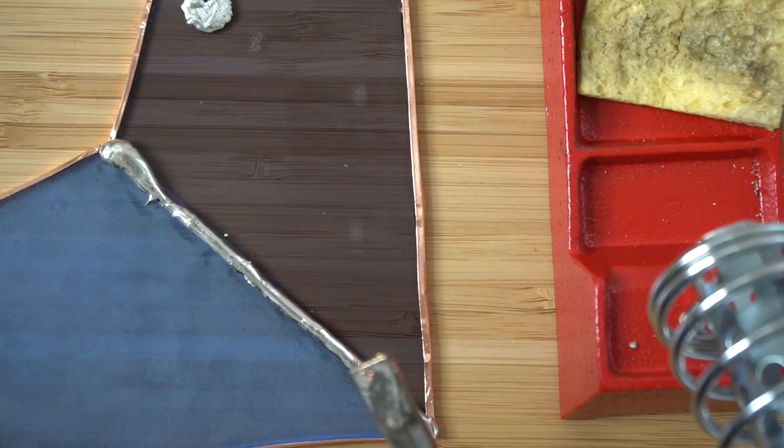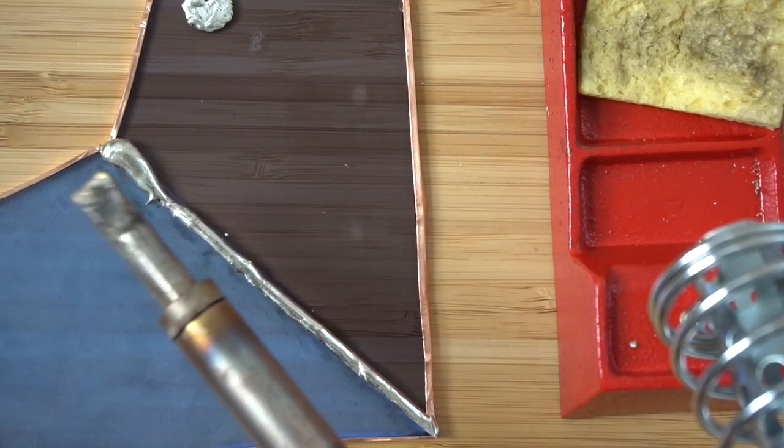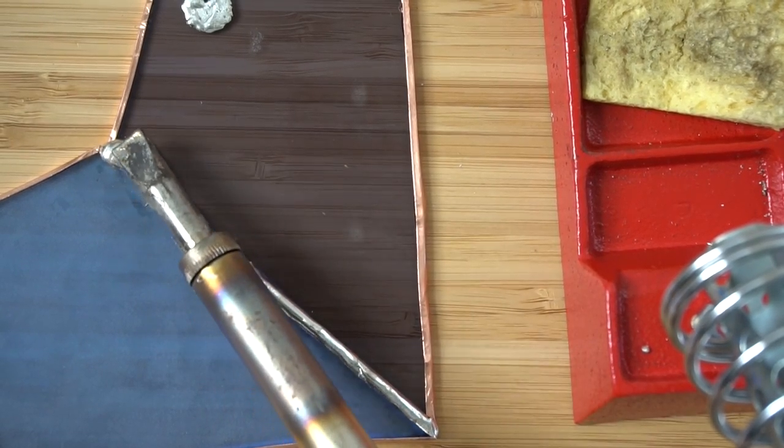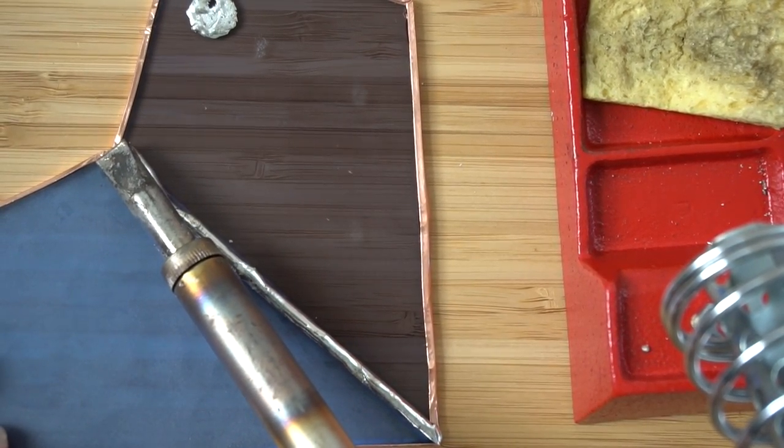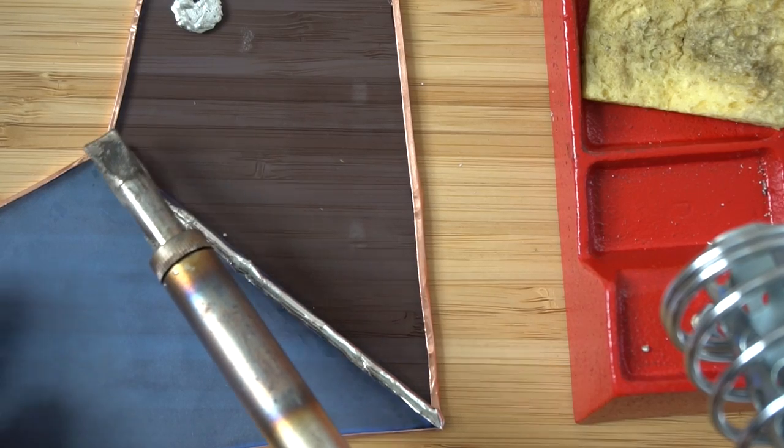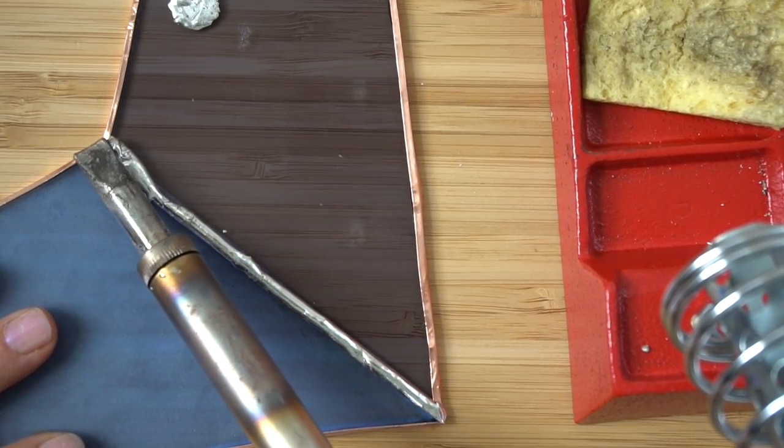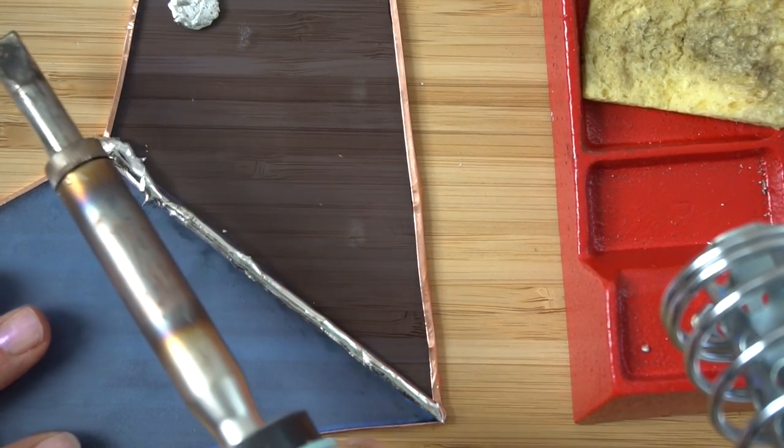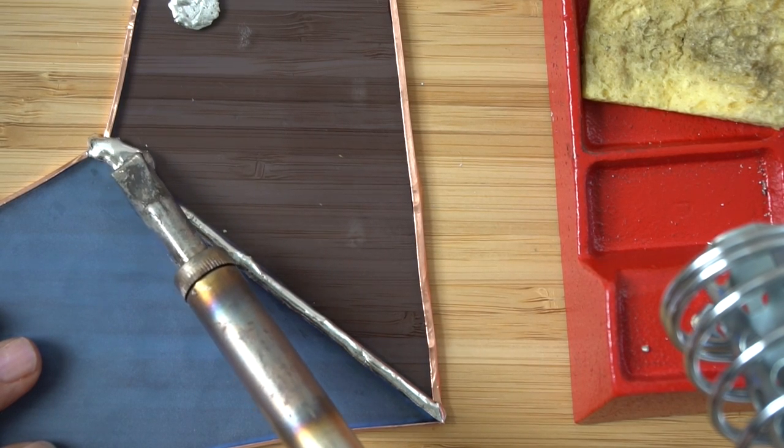To straighten it up, I'm just going to use my hot soldering iron. I don't want this huge glob of it right here at all. Just melting it and kind of lifting it off.